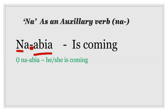Here we have our examples. 'Ona abya' — 'Ona abya' means he, she, or even it is coming. Ona abya: is coming.